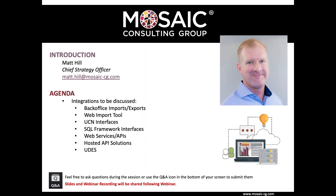A little bit about Matt. Matt has more than 20 years of experience in process improvement, project management, implementations, process optimization, and technology solutions, including seven years working with the UltiPro Human Capital Management Solution. As Chief Strategy Officer for Mosaic, Matt drives company business strategy, identifies and deploys new product and service offerings, and aligns the right resources, tools, and team members to help clients maximize their investment in UltiPro.